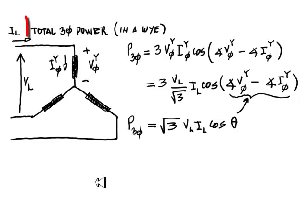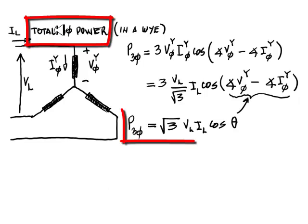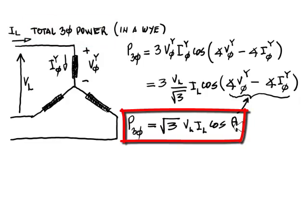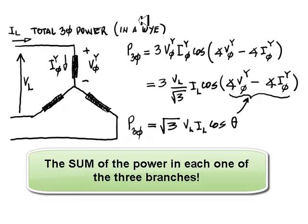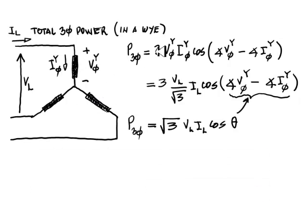Now, as part of the preamble, let's revisit the lecture in which we obtained the formula for total three-phase power. The total three-phase power was the sum of the power in each one of the branches. So we compute the power in each one of those branches, add them together, and that is the total three-phase power. Because of symmetry, the total three-phase power was three times the power in one of these branches.